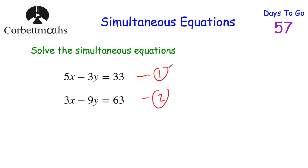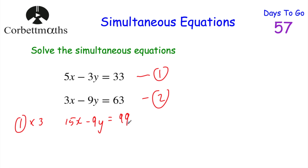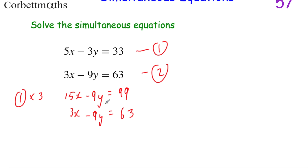If we've got minus 9y and minus 9y, we can subtract the two equations to get 0. So multiplying equation 1 by 3: 5x × 3 = 15x, minus 3y × 3 = minus 9y, and 33 × 3 = 99. So equation 1 multiplied by 3 gives us 15x − 9y = 99. Now we also have equation 2 with minus 9y — both equations have minus 9y, which is fantastic.